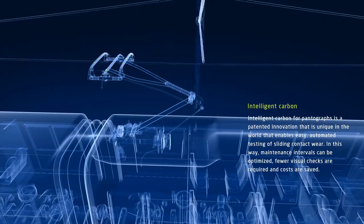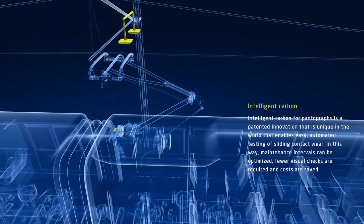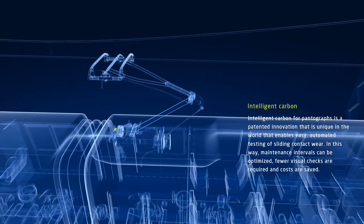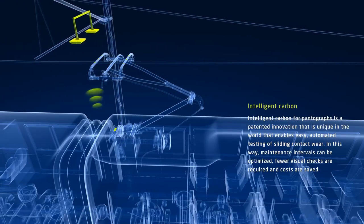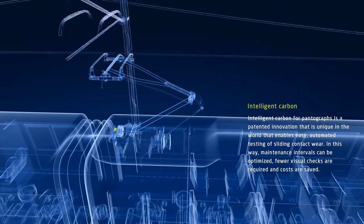Schunk developed an innovative solution for monitoring the sliding contacts of rail vehicles from a central location. Intelligent carbon for pantographs. The measurement of sliding strip wear is automated so that it is easy to determine when they should be replaced. This is Schunk's contribution to optimum maintenance intervals.